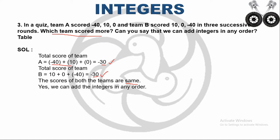Can we add integers in any order? For team A, the first number was -40. If I interchange and put 10 first and -40 second, 10 minus 40 still gives -30. In team B, -40 was the last number, but if I take -40 first and 10 second, I again get -30. The answer does not change, so yes, we can add integers in any order.